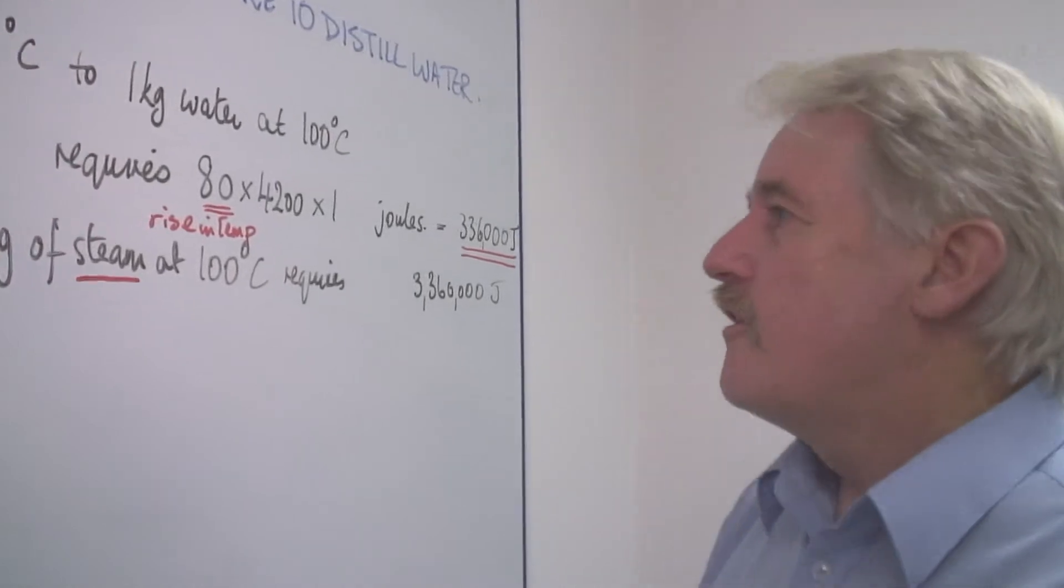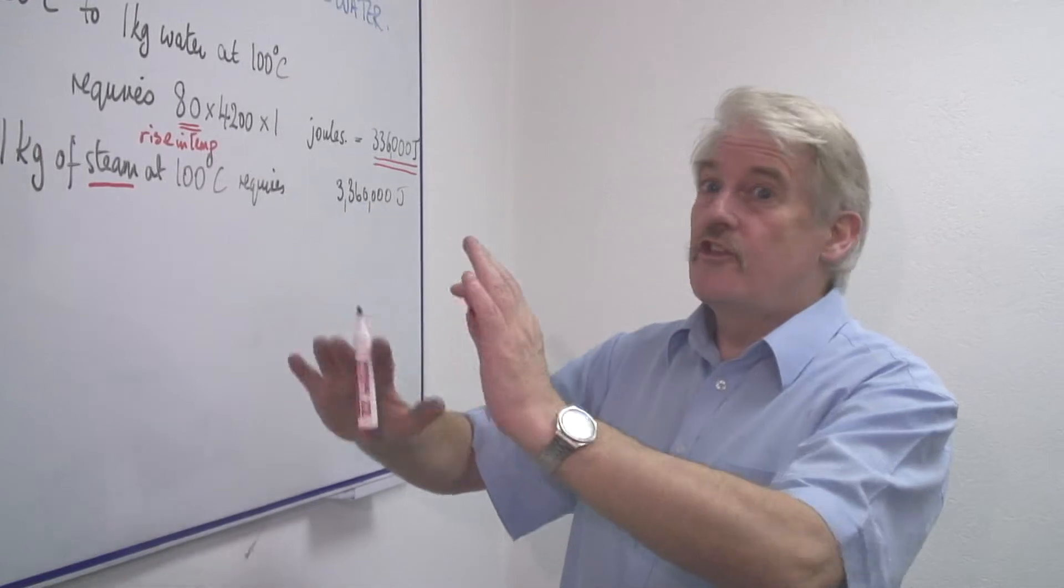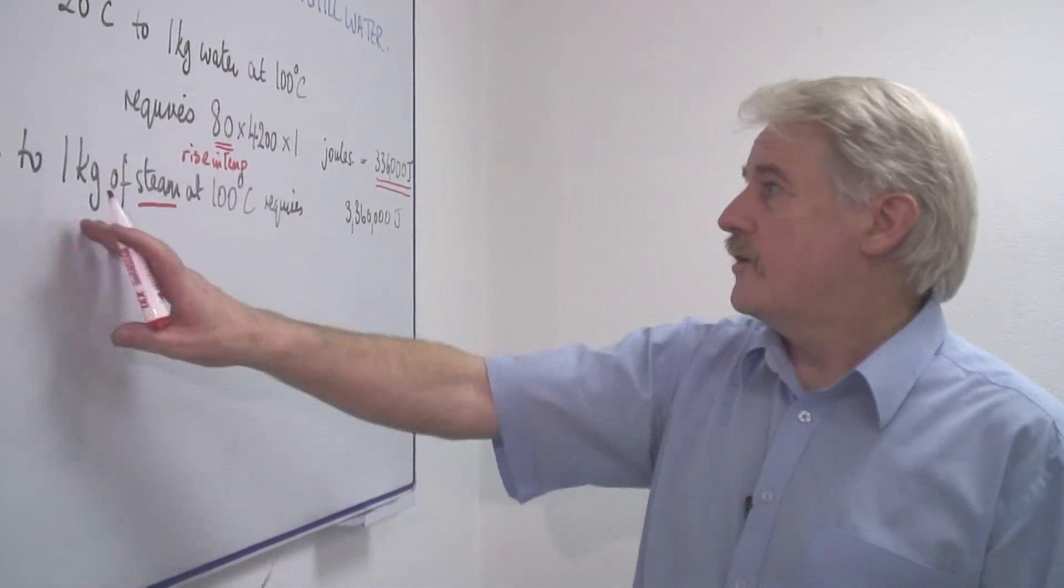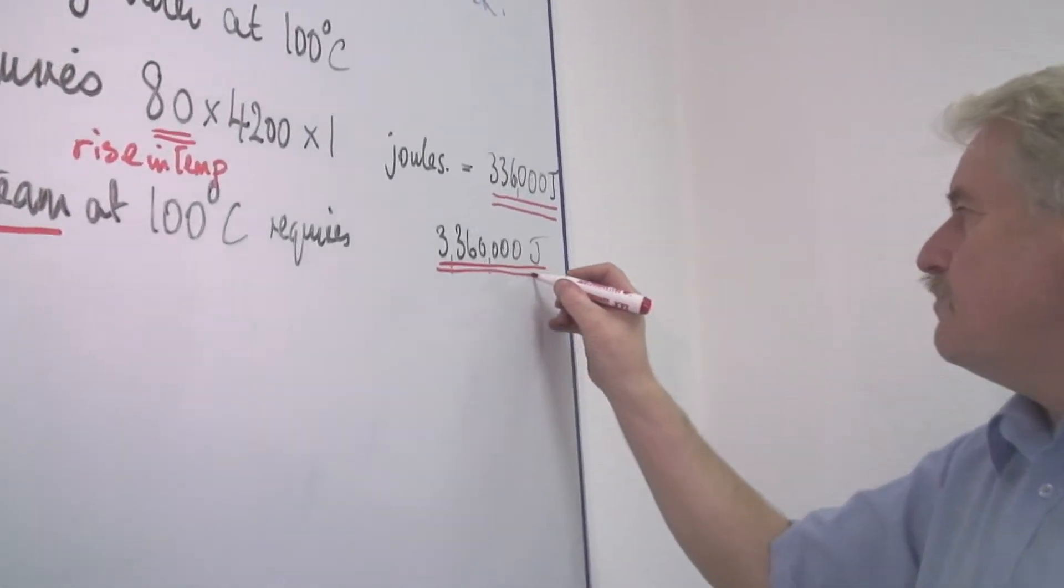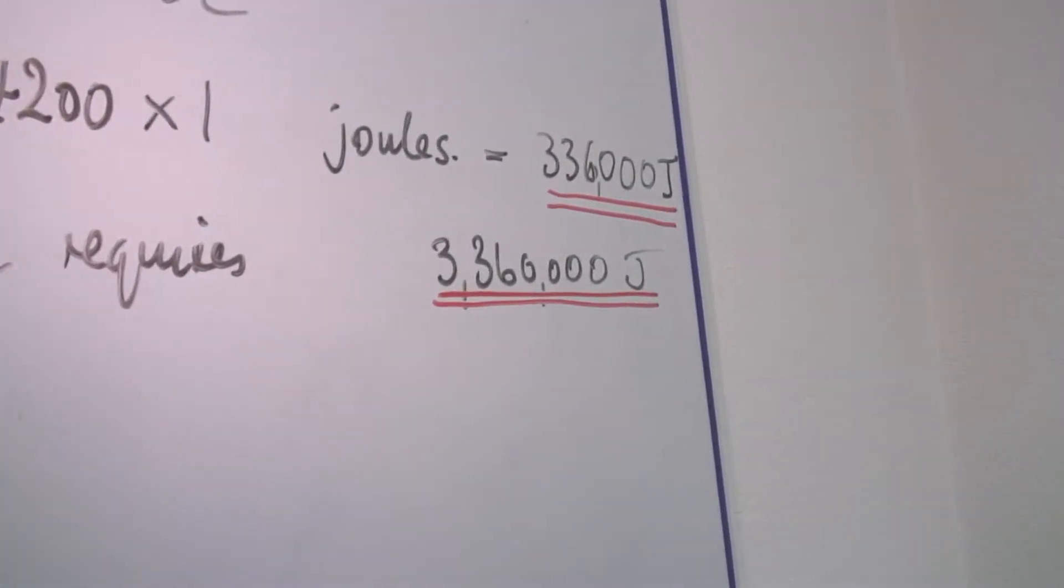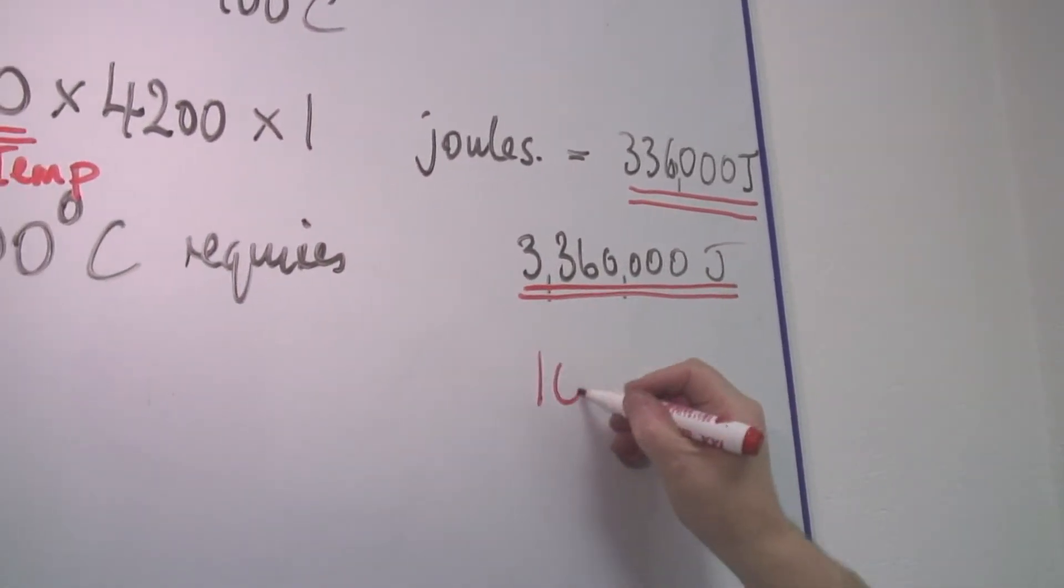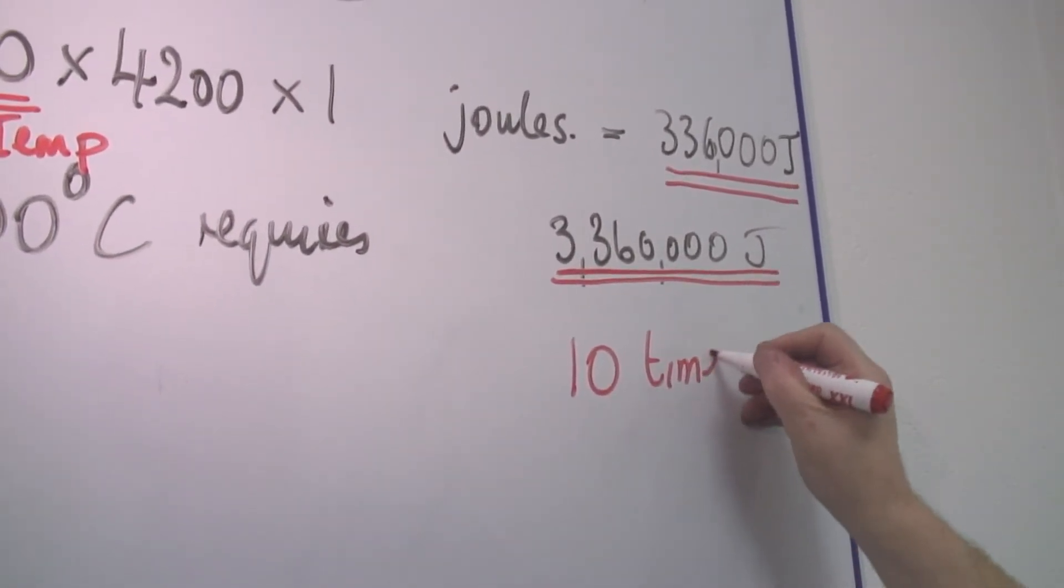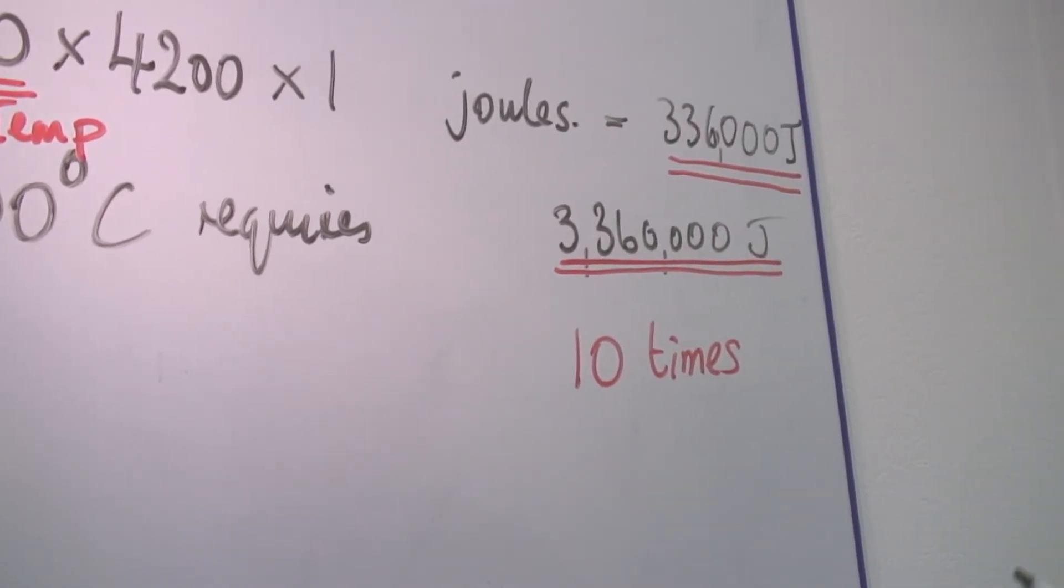In fact, for every kilogram—and of course it happens at 100 degrees Celsius, there's no rise in temperature—but for every kilogram, we need 3.36 million joules. In fact, this is ten times as much as it takes to raise it to boiling point.